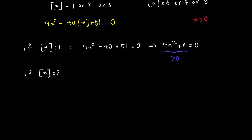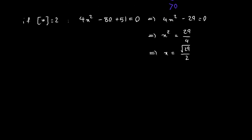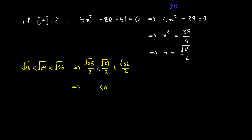Next, let's say floor of x equals 2. We have 4x squared minus 80 plus 51 equals 0, which simplifies to 4x squared minus 29 equals 0, giving x squared equals 29 over 4, so x equals √29 over 2. To check: √29 lies between √25 and √36, so √29 over 2 lies between 5 halves and 3. That means floor of x equals 2, which matches our assumption — this solution is valid.